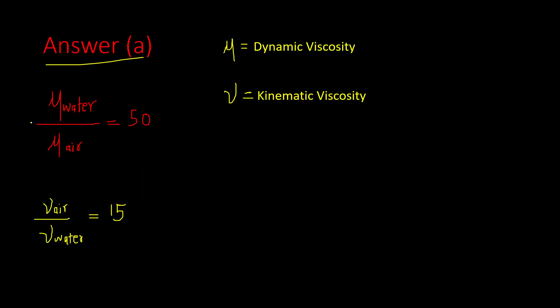For this you have to remember these two facts. First, dynamic viscosity of water by dynamic viscosity of air - this ratio is equal to 50. And kinematic viscosity of air by kinematic viscosity of water - this ratio is equal to 15.